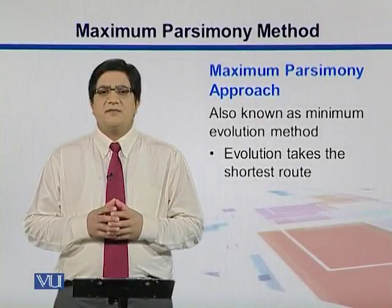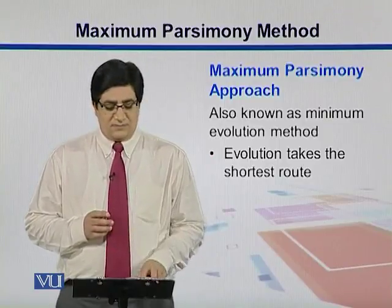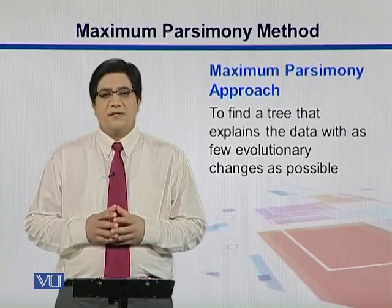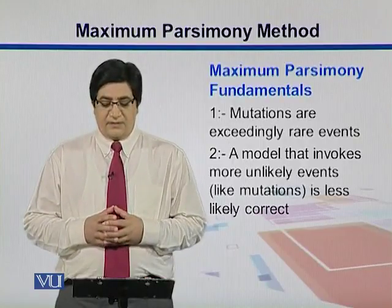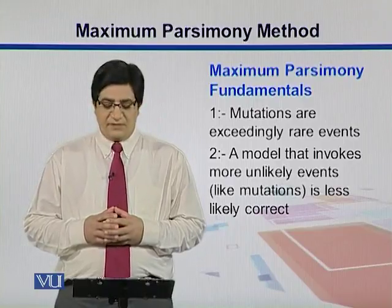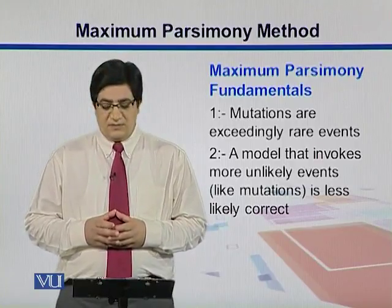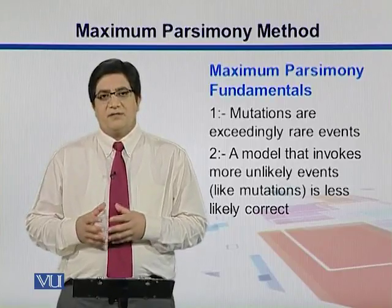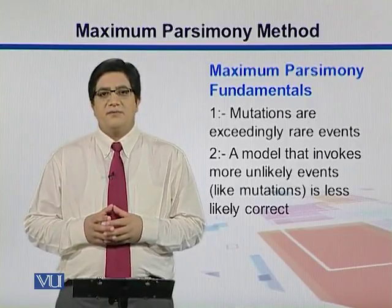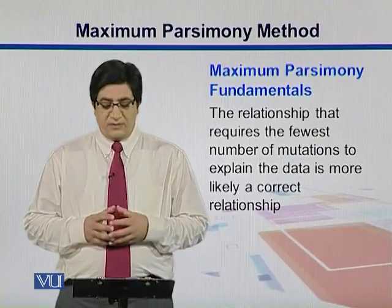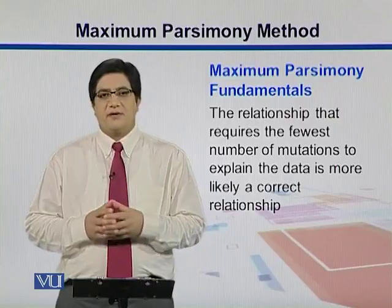Maximum parsimony is also known as minimum evolution. The assumption is that evolution takes the shortest routes and tries to find a tree that explains the data with as few evolutionary changes as possible. The two basic fundamentals are: mutations are exceedingly rare events in nature, and a model that invokes more mutations is less likely correct. So a correct model should have minimum mutations, and the relationship requiring fewest mutations to explain the data is more likely correct.